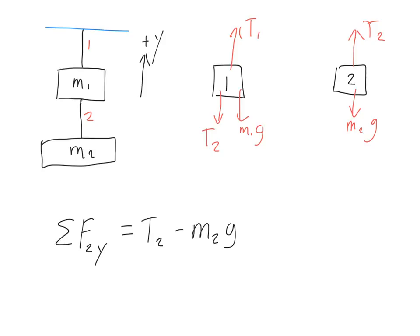And again, since this is not accelerating, the forces balance out, sum of the forces should be zero. So, with one step of algebra, I see that tension 2 is just the weight of that block. Not too bad.